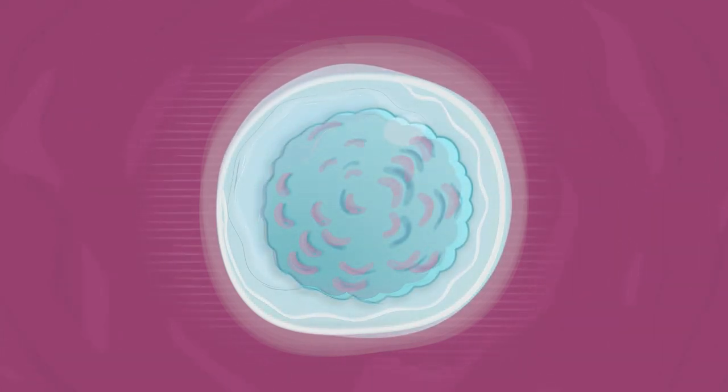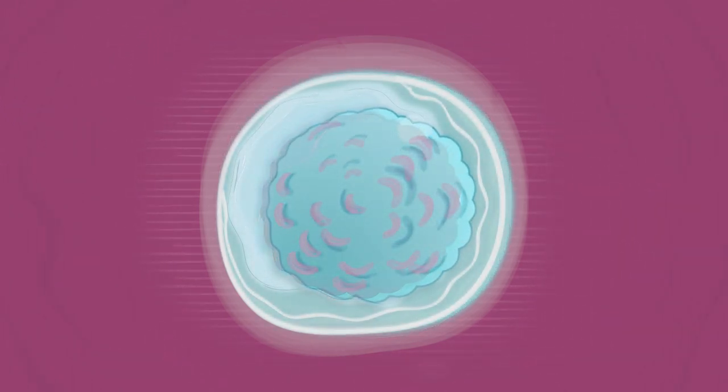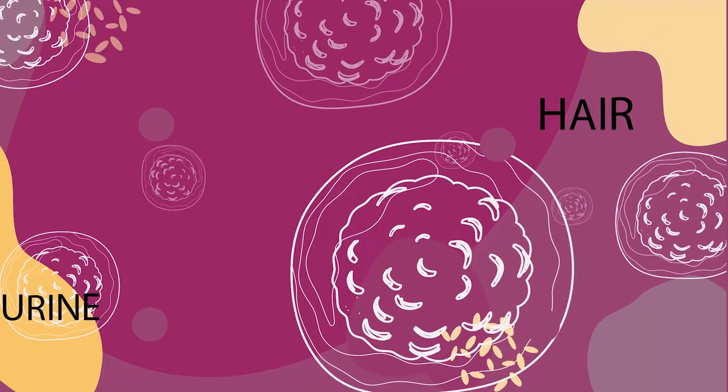IPSCs are generally created from skin cells or blood cells, but research has shown that IPS cells can be derived from hair or even renal cells found in urine.